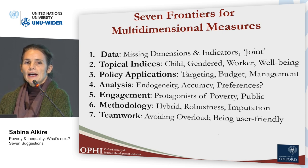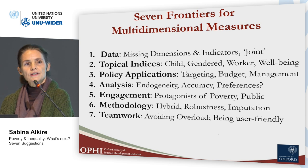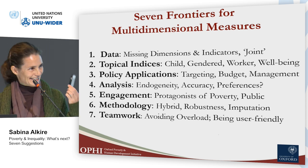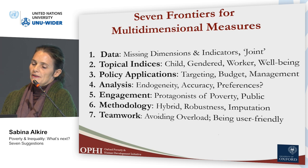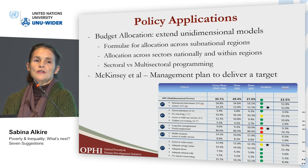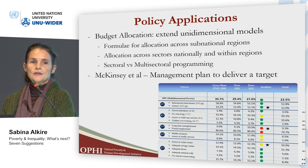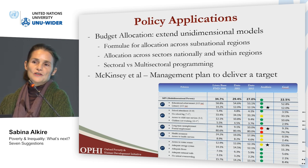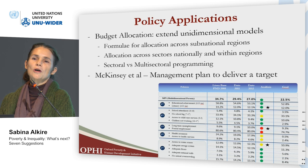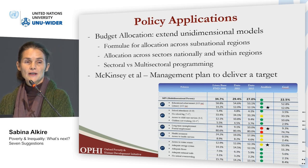Third: a number of governments now use multidimensional measures as official national poverty statistics, and they are running ahead of research in terms of basing policy on them. The government of Bhutan, for example, uses the MPI to allocate its budget across the country's 20 districts. This is also done in Costa Rica, Colombia, and Mexico. But the budget simulation exercises and public expenditure modeling are very much first generation and need a great deal more research.